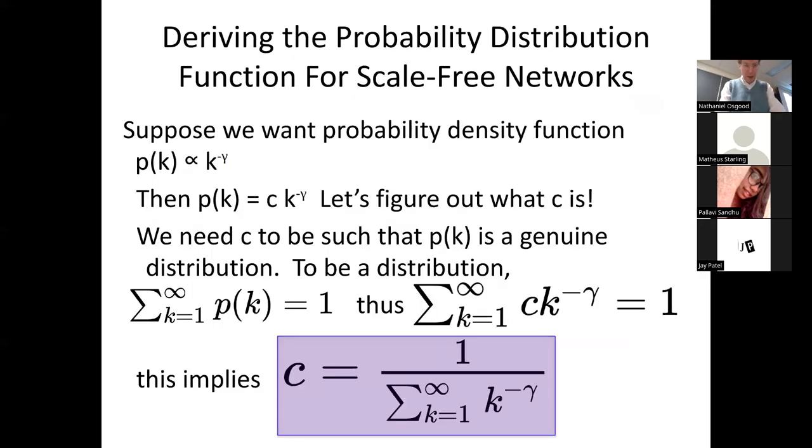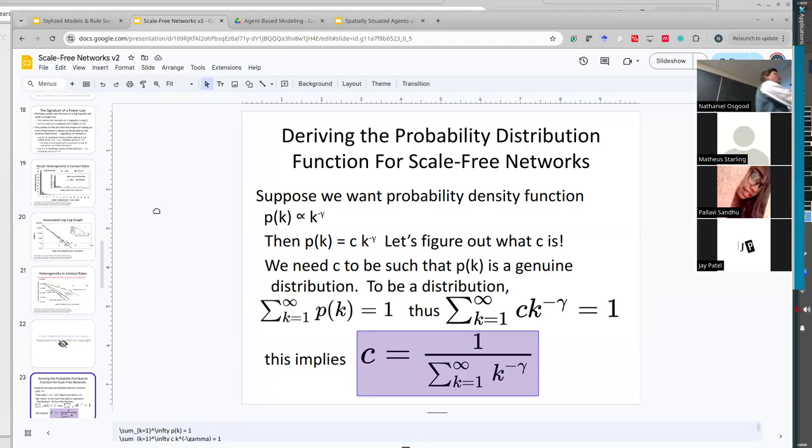Double it, if we consider the fraction of people with double connections versus k connections versus 2k connections, that ratio is always the same. It's some constant. Are you comfortable with that idea? And you could use the alpha. It's not the same alpha, it's just like 2 to the minus. This is a constant. Gamma is a constant. And for human networks, for human sexual networks like gamma is between 2 and 3.5.